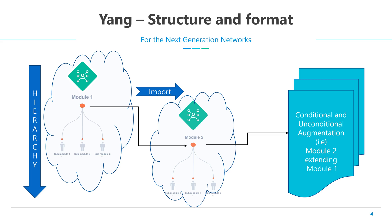A NetConf server can support different Yang modules. Each module can have a set of sub-modules. Each module can also be related to other modules. This relationship can be realized in the form of import — Module 2 can import the data elements in Module 1 and use them. Module 2 can also add data elements to Module 1. This format in which data elements are added by Module 2 to Module 1 is called augmentation. The data elements in the Yang modules can also be subject to various constraints and conditions depending on a particular application.